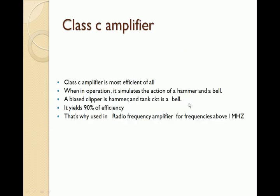The Class C amplifier is the most efficient of all, giving approximately 90% efficiency. It operates like a hammer-and-bell stimulus action, which is why it is used as a radio frequency amplifier for high amplification at frequencies in the megahertz range.